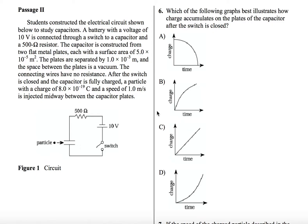The capacitor is constructed from two flat metal plates, each with a surface area of 5 times 10 to the minus 5 meters squared. The plates are separated by 1 times 10 to the minus 3 meters and the space between the plates is a vacuum. So you don't have to worry about the dielectric stuff.